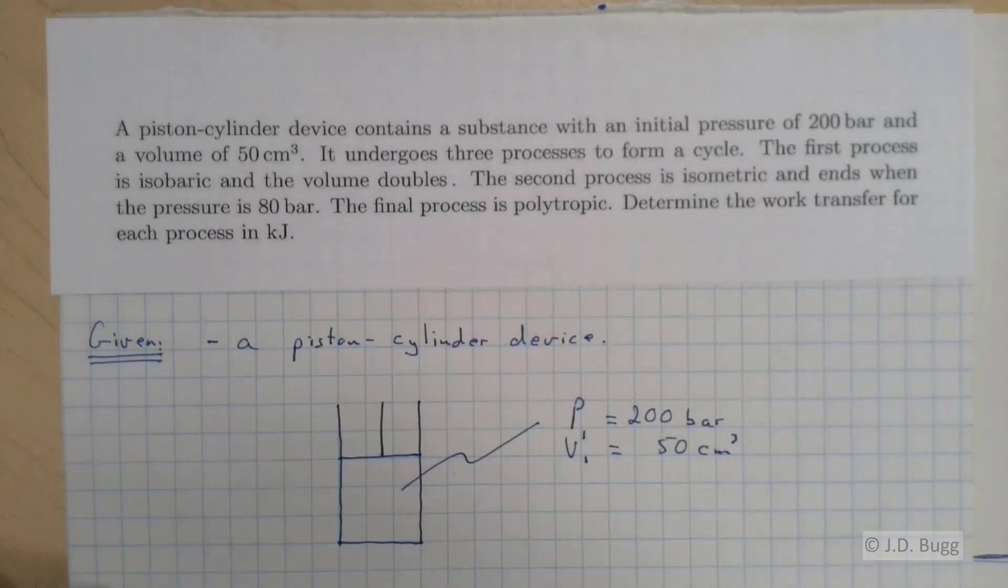So we have a description of processes going on here. So what we'll show in our given information is process 1 to 2. What do we know about it? It's isobaric. Isobaric means constant pressure. So that means P2 equals P1 equals 200 bar.